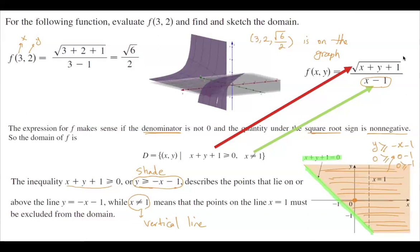At the same time, we have to exclude x equals 1. So that's why you see a shaded line at x equals 1. This is the domain of the function. The domain of the function, as you can see, is a subset of the plane.